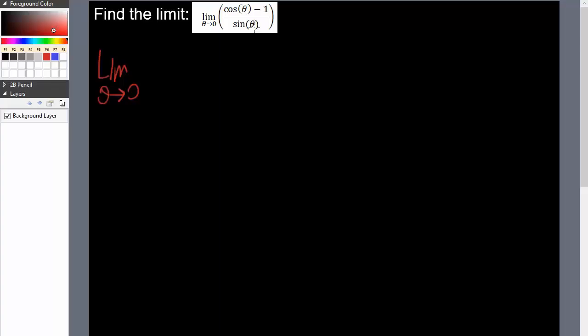So we need to find a way to try to cancel out terms. One method to do this is to multiply by cosine theta plus 1, and if we multiply it, we have to also divide by it. So let's do this.